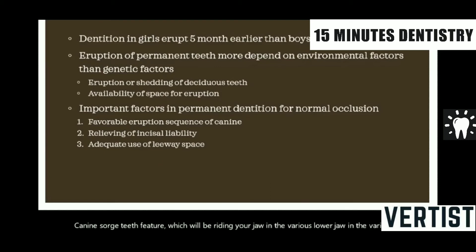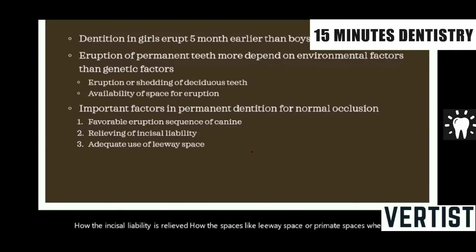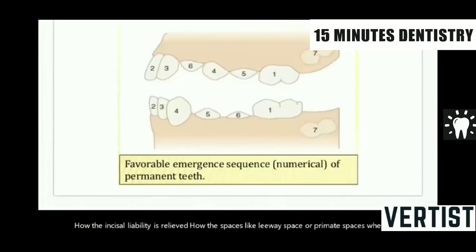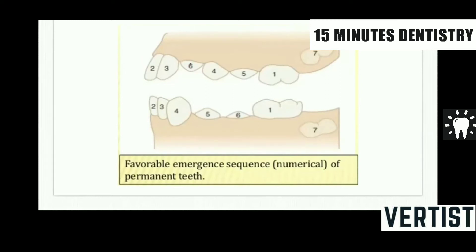How the incisal liability is relieved, and how spaces like the leeway space or primate spaces are utilized for the eruption of the permanent teeth — this is just a schematic presentation of the favorable eruption sequence. In the mandible, it is quite straightforward: first molar, then central, lateral, canine, first premolar, second premolar, and then second molar and third molar. Only in the maxilla does the canine usually erupt after the first premolar, and in some cases even after the second premolar.